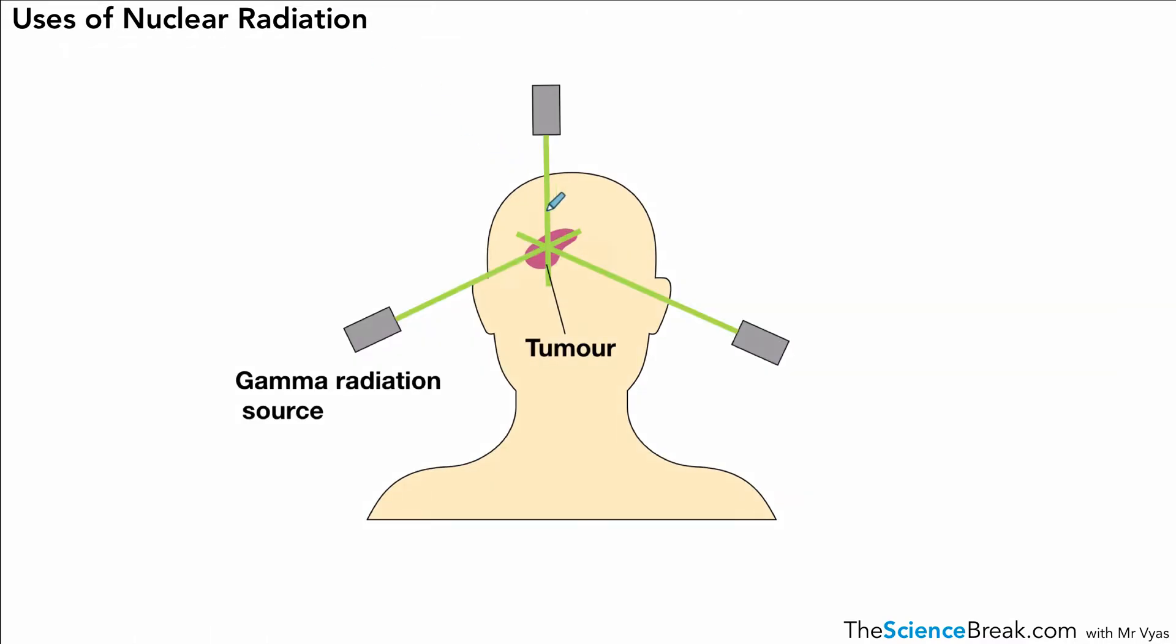Here's the second method we looked at. We've got a radioactive source firing gamma rays at the tumor. The green parts have low exposure to the gamma radiation, whereas the tumor itself, because it's being fired at from three different positions and the gamma radiation meets at the position where the tumor is, has higher exposure. Because of this, the tumor will either be destroyed or reduced in size.